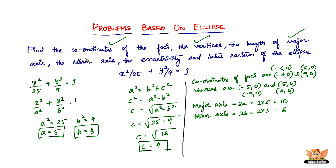Now we find the eccentricity, which is given by e = C / a = 4 / 5. So the eccentricity is 4/5.